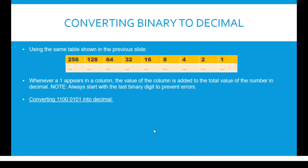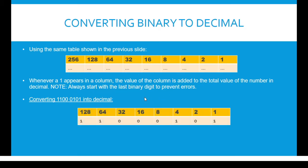Converting binary to decimal is actually quite simple. We start by drawing the same table, and whenever a 1 appears in the column, the value of the column is added to the total value of the number in decimal. Start with the last binary digit to prevent errors. Adding the values together, we get 197.